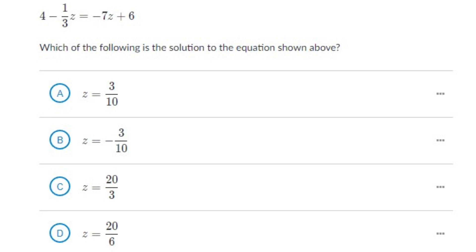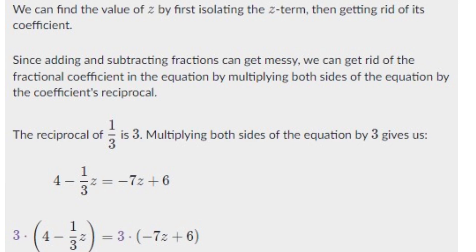So here goes the solution. We can find the value of Z by first isolating the term Z, then getting rid of the coefficient. Since adding and subtracting fractions can get messy, we can get rid of the fractional coefficient by multiplying both sides of the equation by the coefficient's reciprocal. The coefficient is 1/3, so its reciprocal is 3. So we need to multiply both sides by 3.